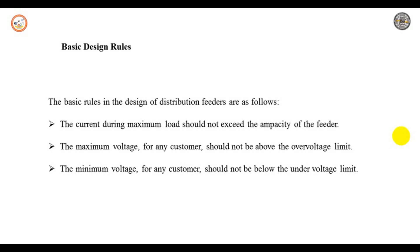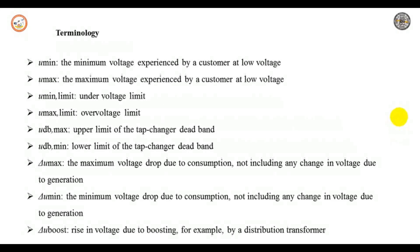So the design of a distribution feeder becomes more complicated when considering all these rules. Let us see the terminology involved in the design of a distribution feeder. U-minimum is the minimum voltage experienced by consumers at the low voltage level. U-maximum is the maximum voltage experienced by customers at the low voltage level. U-minimum limit is the under-voltage limit. U-maximum limit is the over-voltage limit. U-db maximum is the upper limit for tap changes at the dead band, and U-db minimum is the lower limit of tap changes at the dead band.